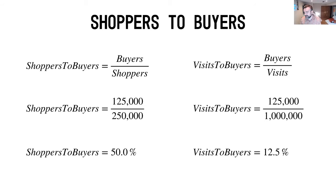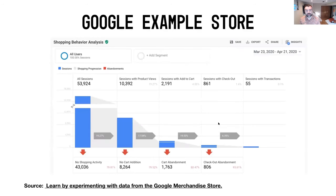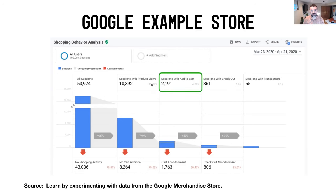Hopefully that's all making sense and coming together for you. Now, if we go back to that Google Analytics example — a tool used by about 70% of websites — it allows us to track people visiting different parts of the conversion funnel. Visitors translate to all sessions, then sessions with product views are your shoppers, and sessions with add-to-cart are your buyers. In this scenario, you can see the running sum of individual steps — visits to product views, then visits to add-to-carts — sitting at about 4%, a bit lower than the 12.5% scenario. The individual step from sessions with product views to sessions with add-to-cart is sitting at about 17.94%.